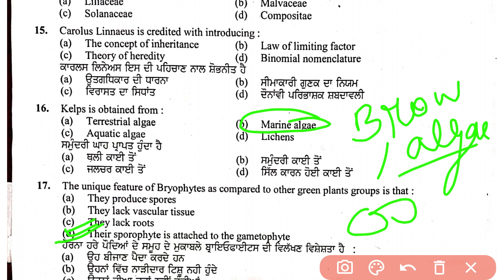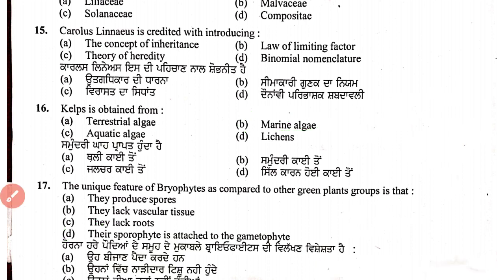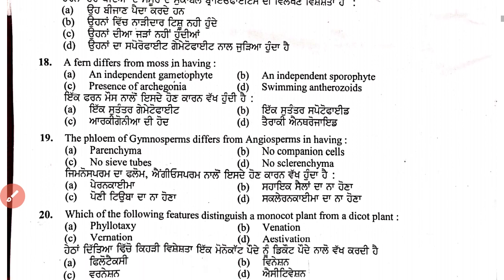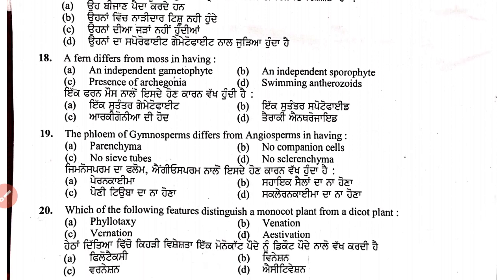Eighteenth question: a fern is different from moss in having an independent sporophyte. In bryophytes, the gametophyte is the dominant phase. In pteridophytes (ferns), the sporophyte is independent and there is vascular tissue.